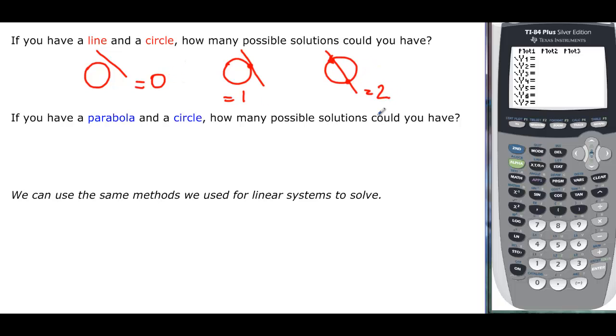So I have zero, one, two possible solutions. What about a circle and a parabola? We could have any combination. We could have a line and a parabola, a line and a circle, a circle and a parabola, a circle and a circle, a parabola and a parabola. We could even have a log and a parabola, all kinds of things. But we're just taking a couple into consideration here.